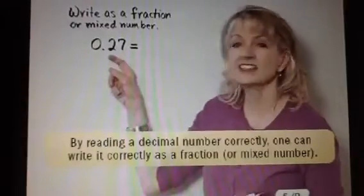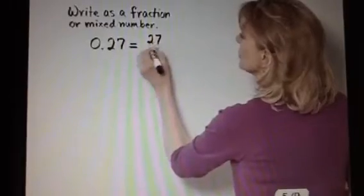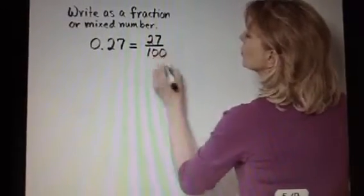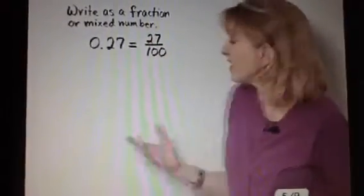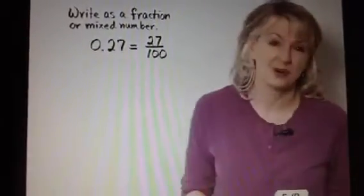Since this is 27 hundredths as a fraction, this is 27 over 100. And there I've written this decimal number as an equivalent fraction.